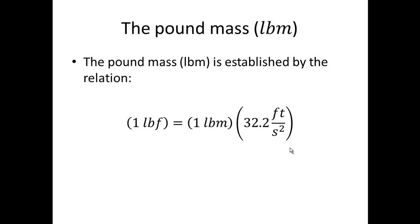In light of that, there is the pound mass. It's established by the relation one pound force equals one pound mass times 32.2 feet per second squared. In other words, one pound force is the force you get from accelerating a pound mass at 32.2 feet per second squared.